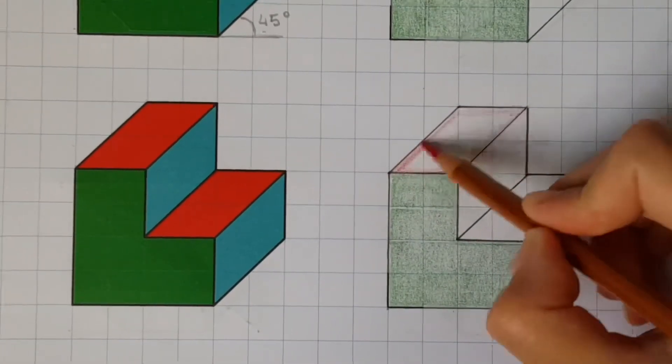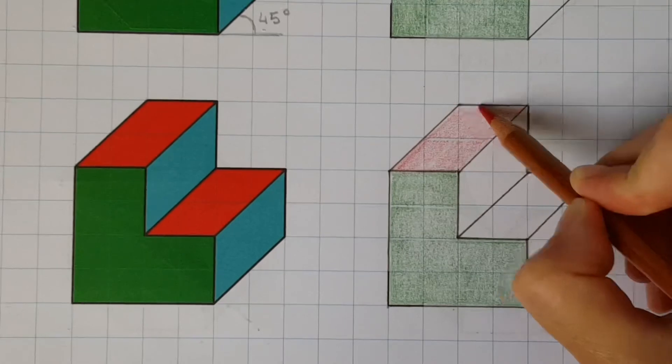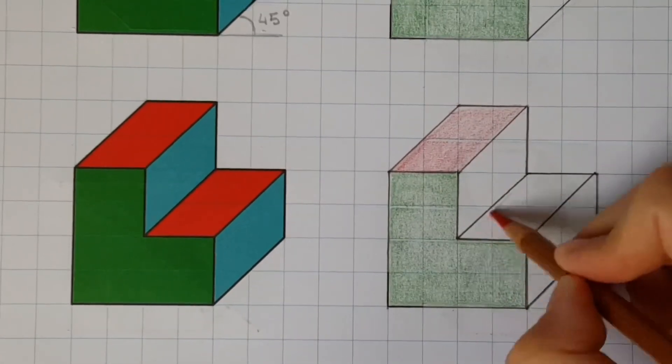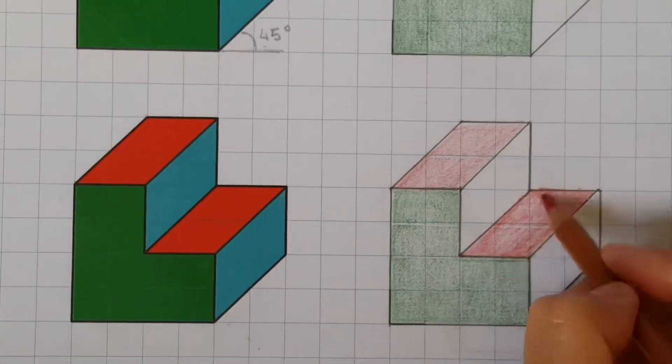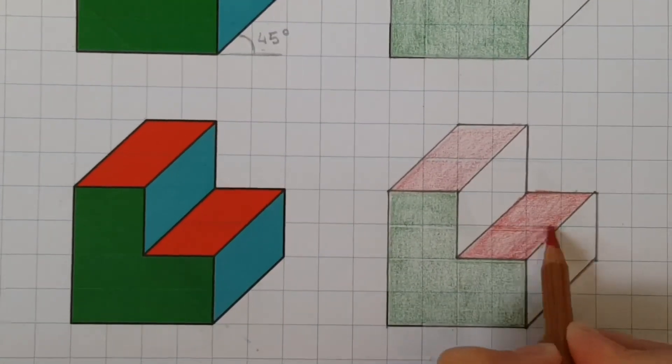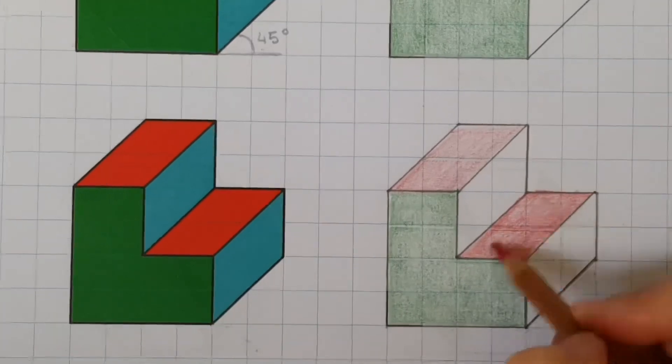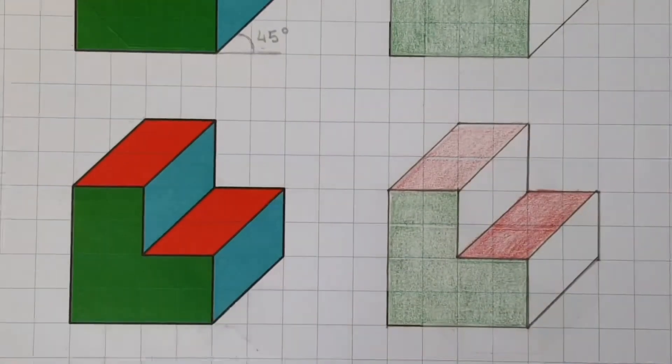So basically, whatever you see from the front is in green. Whatever you see from the inside of your shape is going to be in blue. Whatever you see from the top is going to be in red.